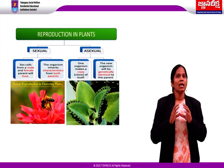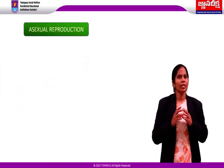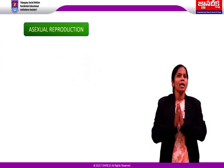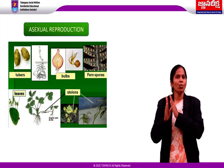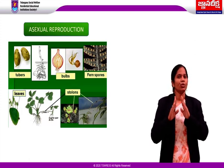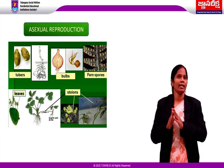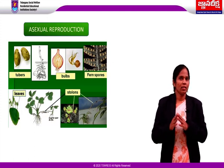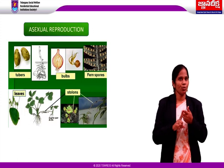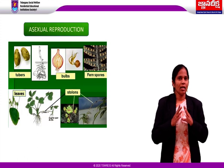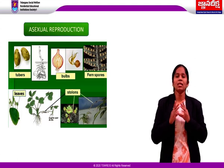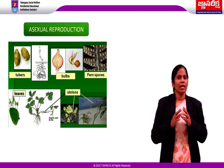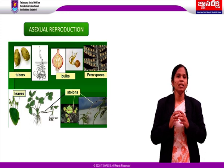In plants, producing new young ones through vegetative parts without forming any seed is called asexual reproduction. Vegetative parts include: tuberous roots (example: dahlia and carrot), tuberous stem (example: potato), stolons (example: jasmine), bulbs (example: Allium cepa, meaning onion), spores (example: fern plant), and leaves (example: Bryophyllum).